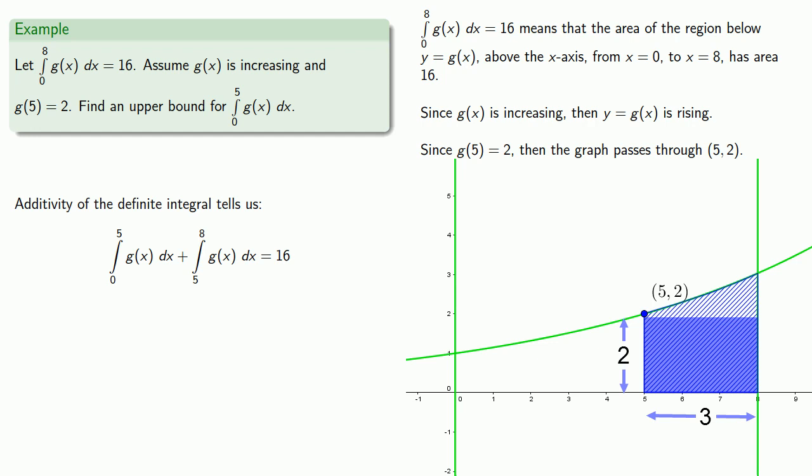which means that the area of the region is greater than or equal to 6 and so we know that the definite integral from 5 to 8 of g of x must be greater than or equal to 6. But since these two integrals add to 16 then if this one is greater than or equal to 6, then the other one must be less than or equal to 10.